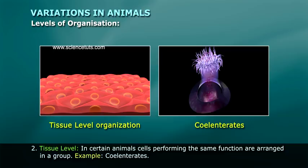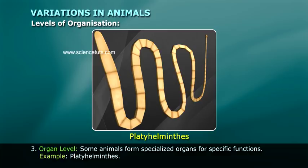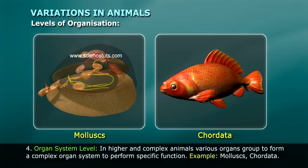At the tissue level, cells performing the same function are arranged in a group. Example: coelenterates. At the organ level, some animals form specialized organs for specific functions. Example: platyhelminthes.